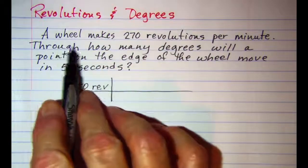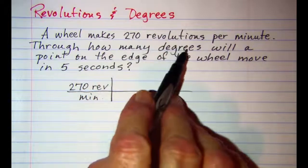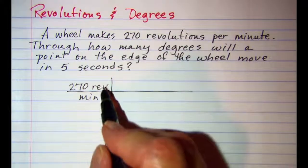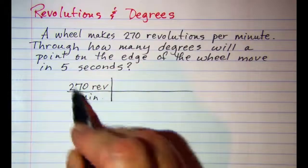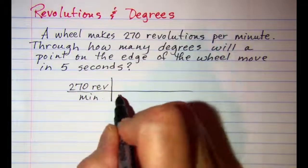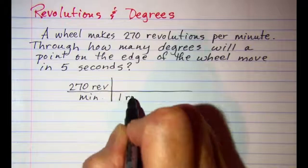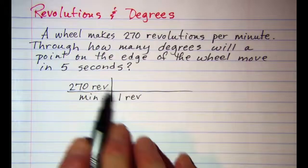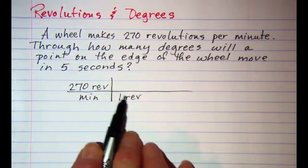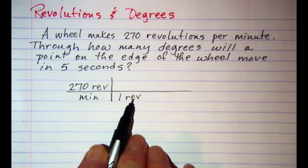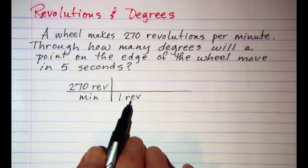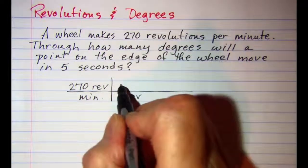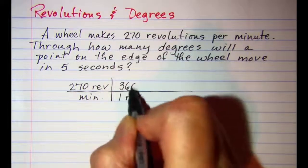Our question is we want to know how many degrees, so we would multiply this fraction. I put one revolution in the denominator so that these units would cancel - revolutions in the numerator and revolutions in the denominator. And I know that one revolution is the same as 360 degrees.